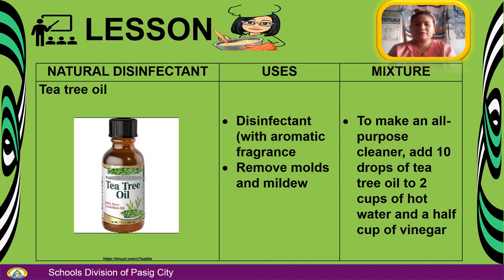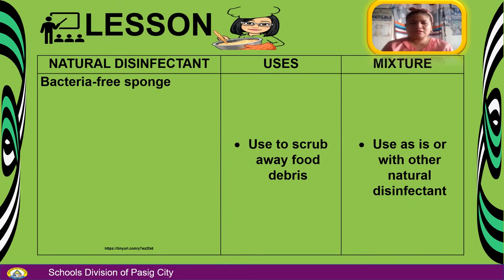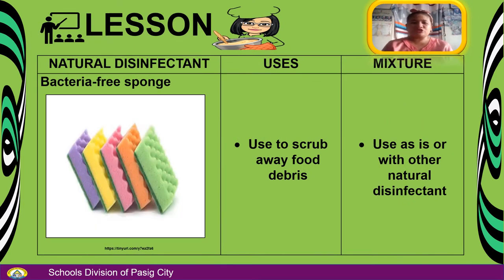Tea tree oil — uses include being a disinfectant with aromatic fragrance and removing molds and mildew. To make an all-purpose cleaner, add 10 drops of tea tree oil to 2 cups of hot water and 1 cup of vinegar. Last is the bacteria-free sponge, used to scrub away food debris, and used as is or with other natural disinfectants.